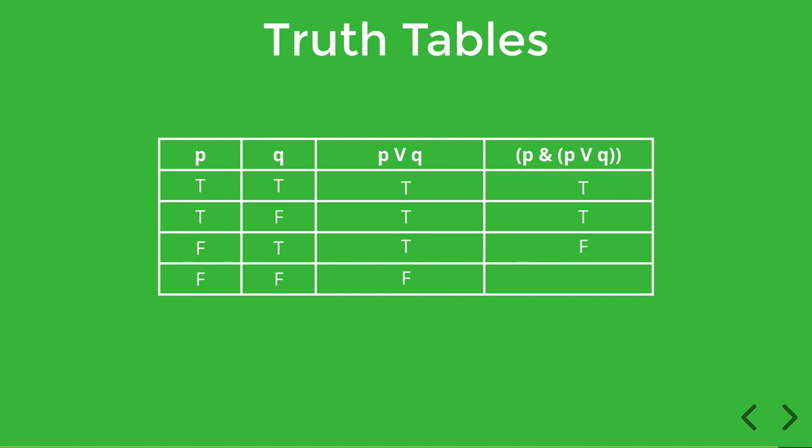Finally, for row four, we have false in column one and false in column three. And they're both false. So in this case, the conjunction is definitely false. So the truth table for P and P or Q is true, true, false, false.